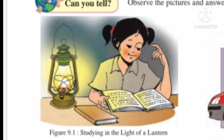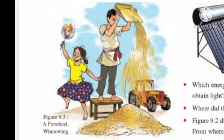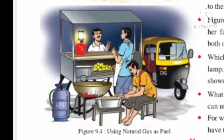Let us begin our explanation by observing the above figures. Figure 9.1 shows us a girl studying in the light of the lantern. Please observe the diagrams carefully because after observing all the diagrams, we are going to answer some questions based on them. Figure 9.3 shows us a girl playing with a pinwheel and a man winnowing the crops. Figure 9.4 shows us a man cooking or frying with the use of natural gas as fuel.